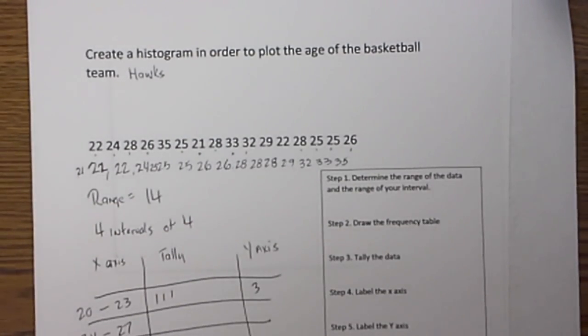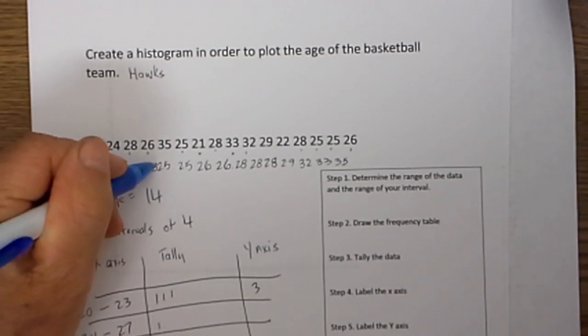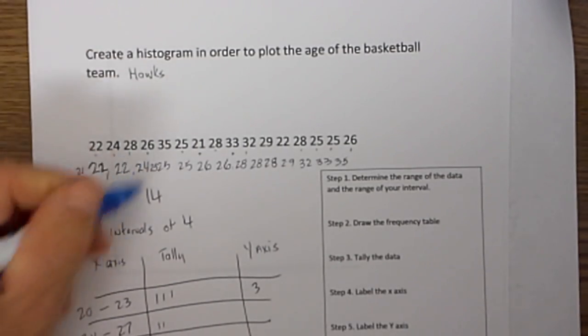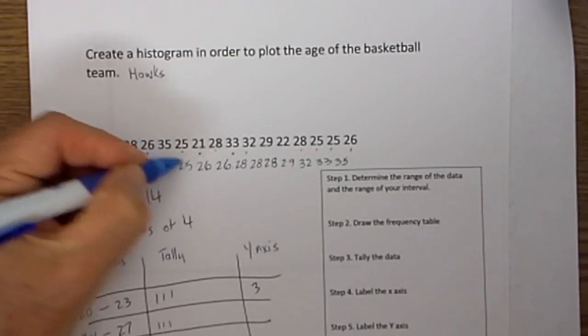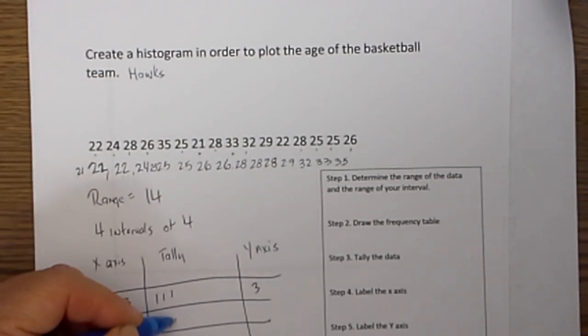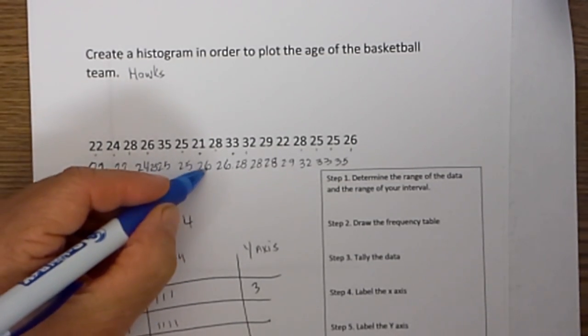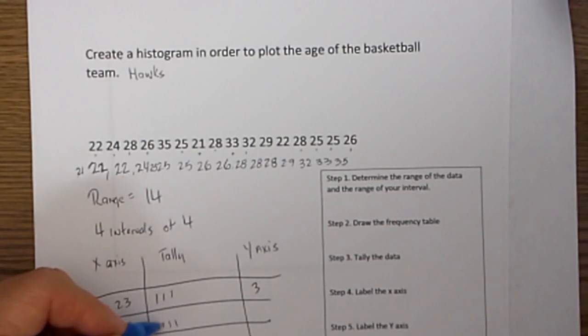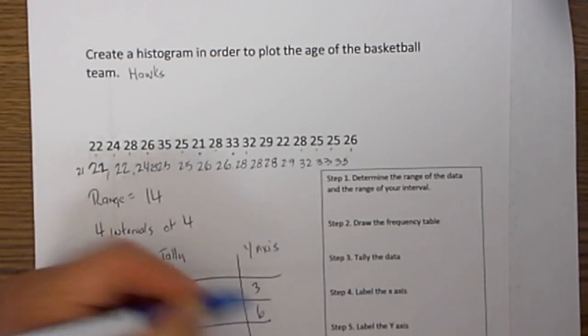So now I go 24 through 27. I am going to have 24, 25, 25, 25, 26, and 26. And that is going to be 6.